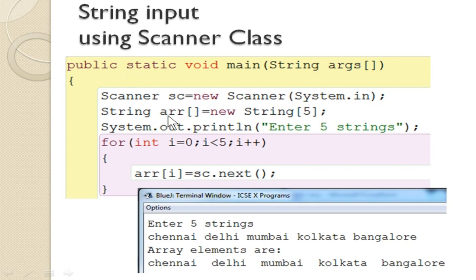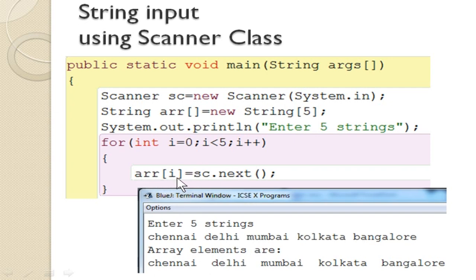For string input using the Scanner class, the data type is String, and you use new String[5] to enter 5 strings. A loop from 0 to 4 executes the input statement 5 times. Since it is a string, it takes tokens one by one — the first token is stored at position 0, and so on. For example, entering city names: Chennai will be stored in ARR[0], Delhi in ARR[1], and so on. For output, you display ARR[i] with the loop running from 0 to less than 5, which displays all elements in the array.